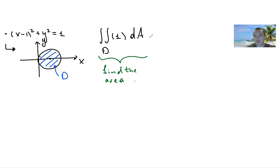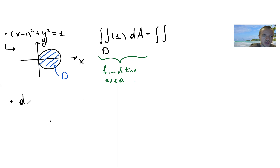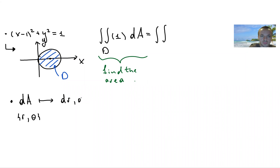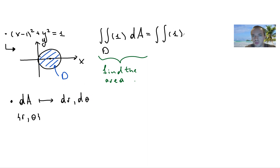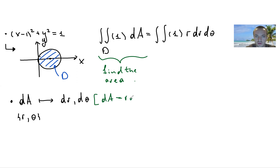For this integral the tricky part is that I need to use polar coordinates and figure out my bounds. In polar coordinates, the coordinates are r and θ, and dA is expanded in terms of dr and dθ. You don't forget there's an extra factor called the Jacobian. So dA expands as r dr dθ, and since my function is just the constant 1, I rewrite it as the integral of r dr dθ.